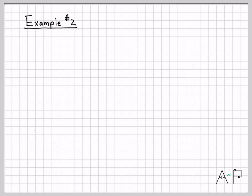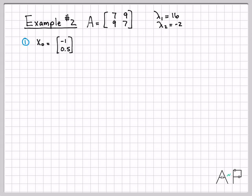Let's do another example. We're going to work with the exact same matrix, but we're going to start with a completely different guess for x_0, and it will still converge. That'll give us some confidence that the initial guess really doesn't matter — all that really matters is that you have a dominant eigenvalue in the matrix. Let's go through the same algorithm a little quicker since you've seen the pattern.